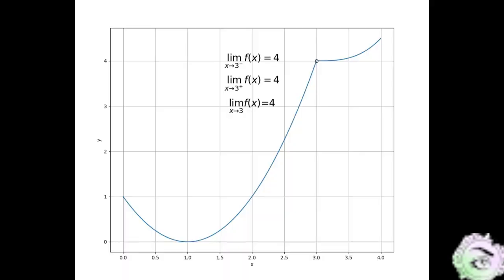Finally, let's find the function value at x equals 3. To determine this, we need to locate the point on the graph that corresponds to x equals 3 on the x-axis. Let's identify the point where x equals 3 on the x-axis, which is shown by the red dot. To find the value of the function at x equals 3, we need to draw a vertical line through the red dot. The y-coordinate of the point where the graph intersects the vertical line will give the function value at x equals 3.